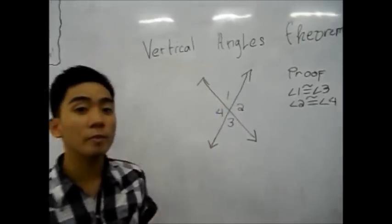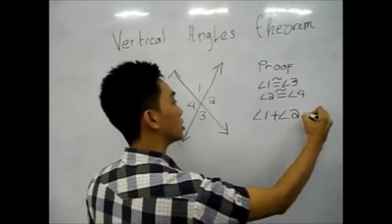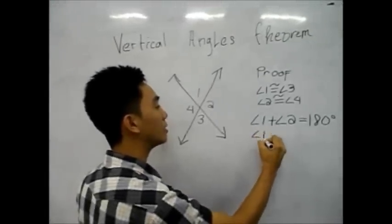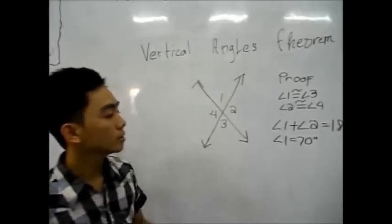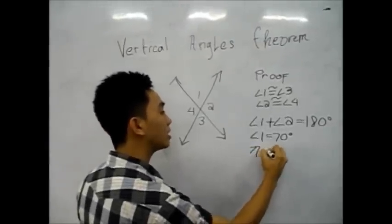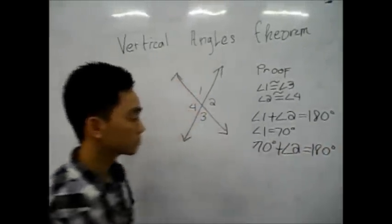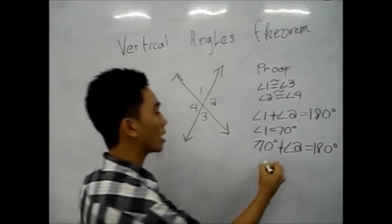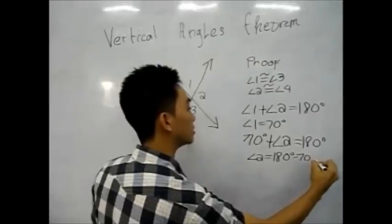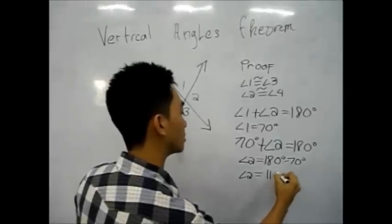Angle 1 and Angle 2 form a supplementary angle, so Angle 1 plus Angle 2 is equal to 180 degrees. Assuming that Angle 1 is equal to 70 degrees, we can solve for Angle 2: 70 degrees plus Angle 2 equals 180 degrees, so Angle 2 is equal to 180 minus 70 degrees, which gives us 110 degrees.